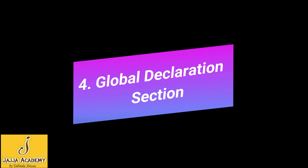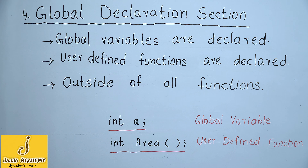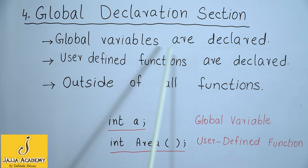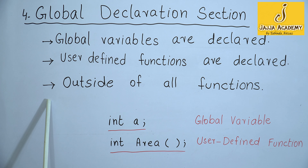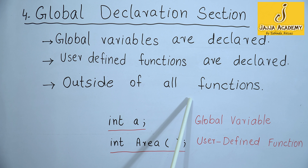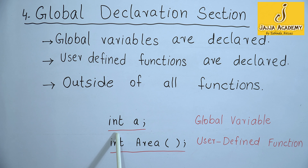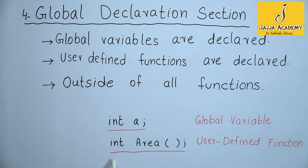The fourth section is the global declaration section. There are some variables that are used in more than one function; such variables are known as global variables and are declared in the global declaration section. User-defined functions are also declared in the global declaration section, which is outside of all functions. For example, int a is a global variable that can be used in all functions of a program. A user-defined function such as integer area() would also be declared here.